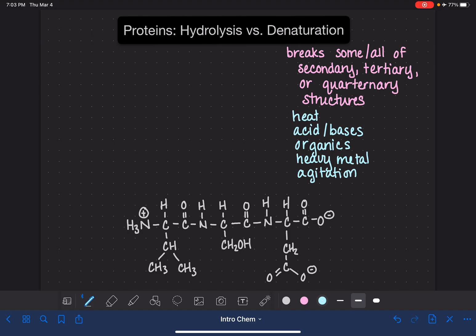And it could also be caused by severe agitation. The heat and acids and bases and organic chemicals all break hydrogen bonds in the secondary and tertiary structures. So these will break a hydrogen bond. Acids and bases also break a hydrogen bond. Organic chemicals break hydrogen bonds.